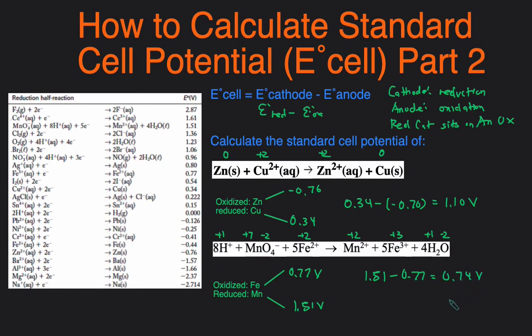So that's how you would calculate the cell potential using this technique of the cathode minus the anode. Just remember that the cathode is the part where the reduction reaction occurs and anode is where oxidation occurs. So you can just think of this as the reduction potential minus the oxidation potential. And then you can use oxidation number to determine what's oxidized and reduced.